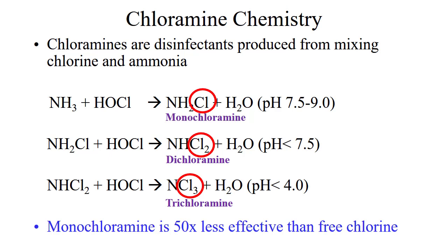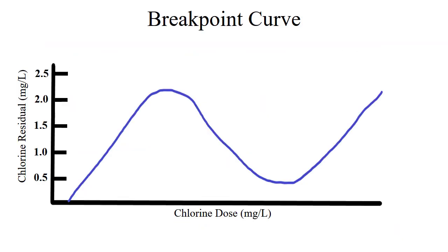Monochloramine is 50 times less effective than a free chlorine residual. This is why the monochloramine residual lasts longer in a distribution system compared to a free chlorine residual and is an effective secondary disinfectant. It is important for any operator working with chloramines to understand the breakpoint curve. Understanding where the plant is on the curve ensures the plant will maintain water quality goals and meet state and federal regulations. The x-axis of the curve is the chlorine dose, or how much chlorine is added to the water. The y-axis is the total chlorine residual. For this video, we made the range from 0 to 2.5 milligrams per liter, but this scale can change based on the target total chlorine residual for the water utility.